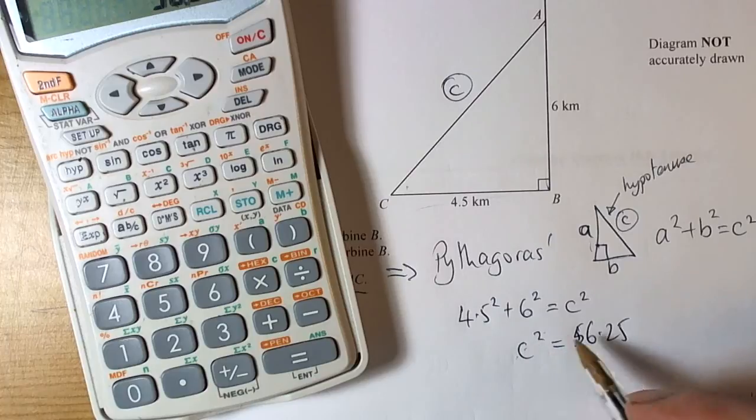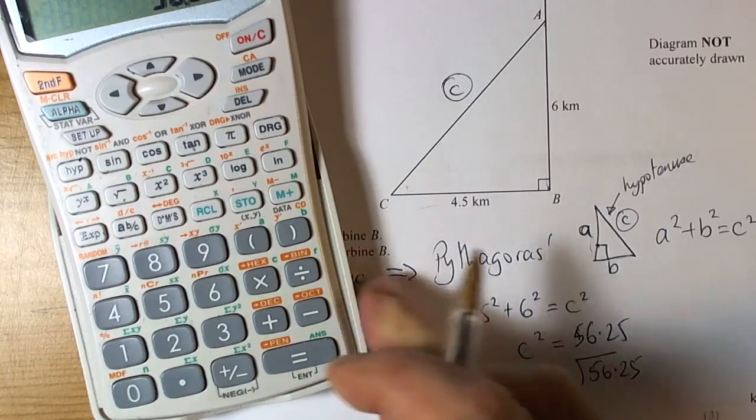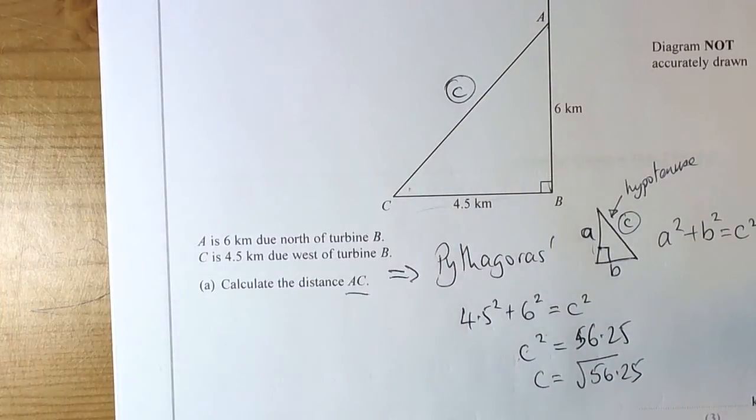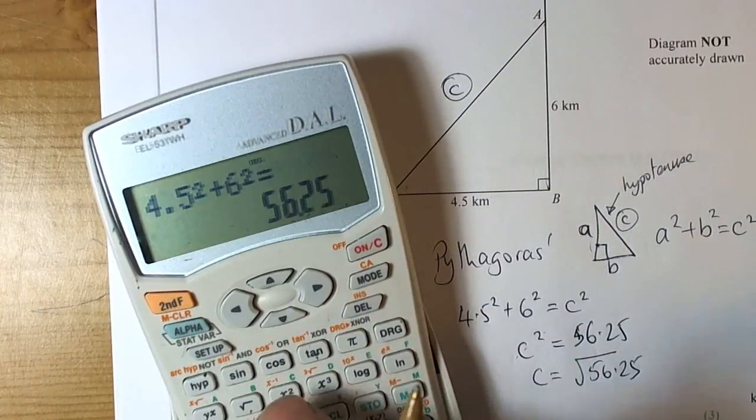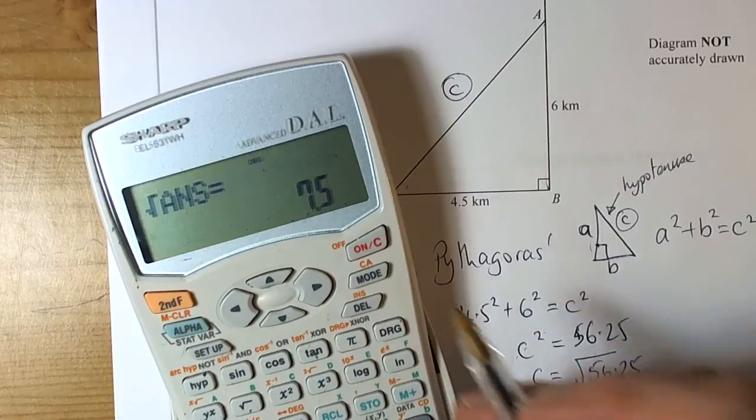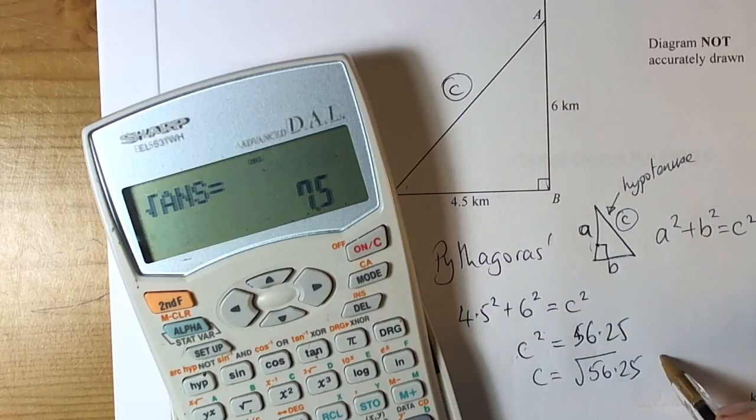So the length of C squared is equal to 56.25. Because we want the length of C, the opposite of square is square rooting, so we square root that. The question hasn't implied any particular accuracy, but it comes up as one decimal place anyway, so the answer is 7.5 km.